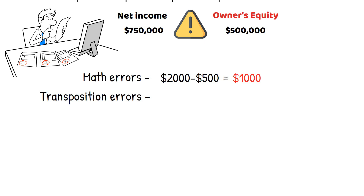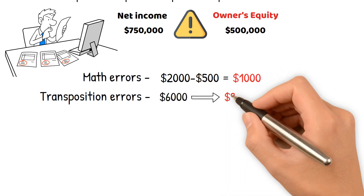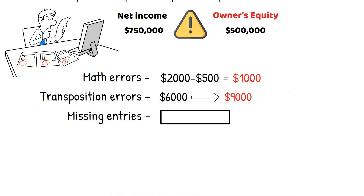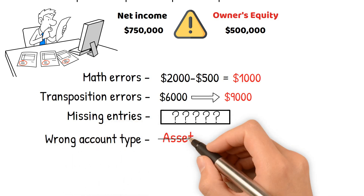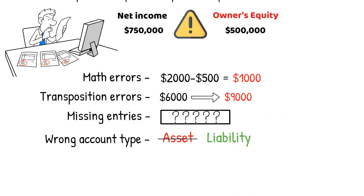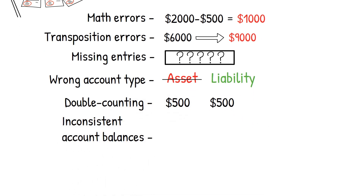Transposition Errors, which are when digits or entire figures are accidentally switched around. Missing Entries, which occur when a transaction or balance is not included in the worksheet. Wrong Account Type, meaning an account recorded as an asset but should have been recorded as a liability. Double Counting, which is counting the same transaction or balance twice. Inconsistent Account Balances, meaning discrepancies between account balances in different worksheet sections.